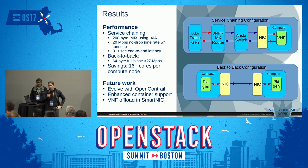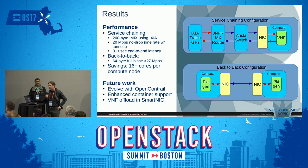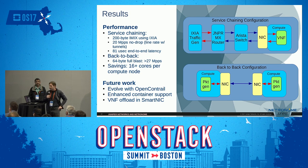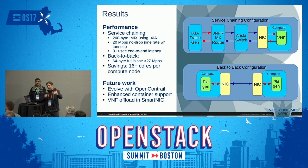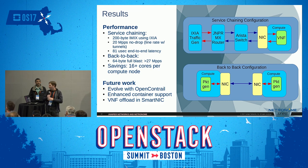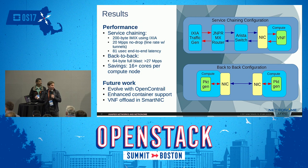With 200-byte IMIX traffic, we were able to saturate a 20 gig link with no-drop performance at 20 million packets per second, which is basically line rate when you consider the tunnel overheads involved. For a full blast, we can deliver 27 million packets per second in and out of the system. Going forward, we hope to evolve this system as Contrail evolves — we're going to improve it to enhance container support, and we're also going to look at offloading VNFs themselves to the SmartNIC to make the system even faster for VNF use cases. Thank you very much.